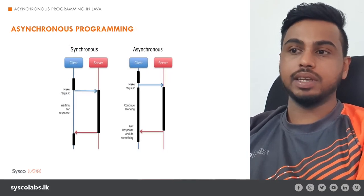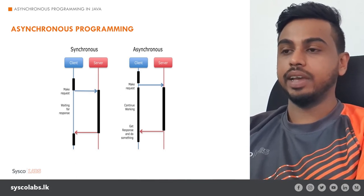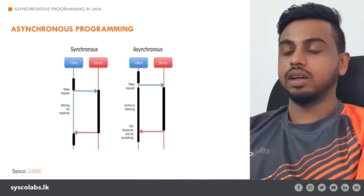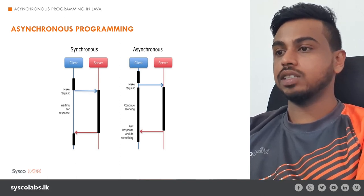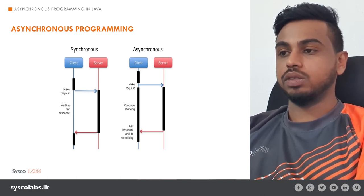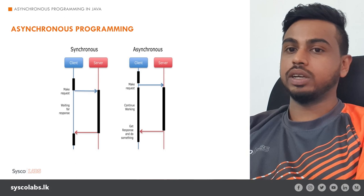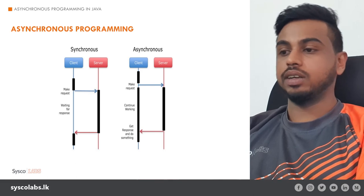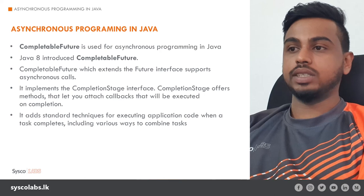Here we have a diagram that explains the synchronous pattern and the asynchronous pattern. We have the client and server. In the synchronous pattern, the client makes a request to the server and waits for the response — it will not do any work during this time. Once the response is received, it will continue working. In the asynchronous pattern, the client makes a request to the server and does not wait for the response. In the meantime, it continues working on some other task, and once the response is received, it starts working on that response as well.